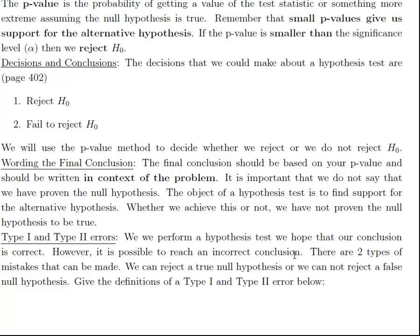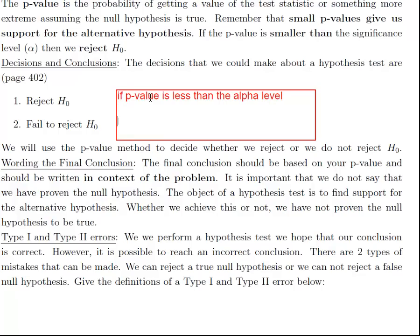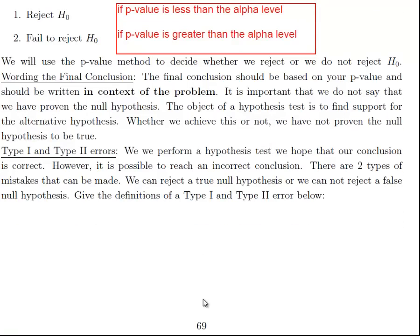When we make a conclusion for our hypothesis test, we will either reject the null or fail to reject the null. Reject the null if our p-value is small, if the p-value is less than the alpha level. Or we fail to reject if our p-value is greater than the alpha level. You might have noticed that when I word my conclusions in context of the problem. In the above example we were talking about proportion of individuals that smoke, so I wanted to include that in my conclusion. Not only should I say whether I reject or fail to reject the null, but I also want to put that in context of the problem.